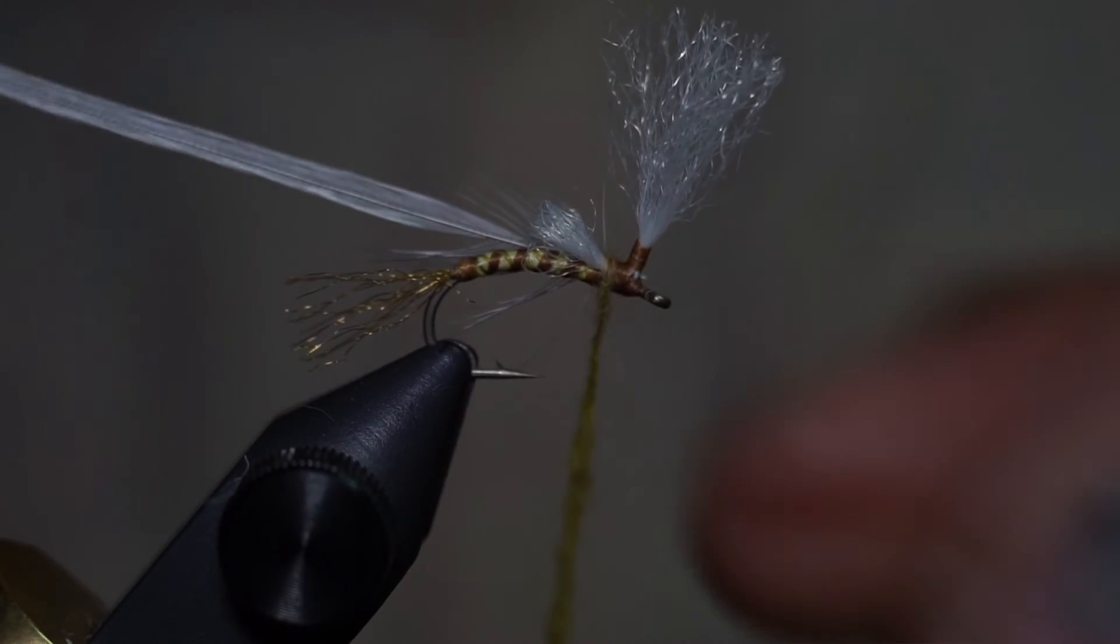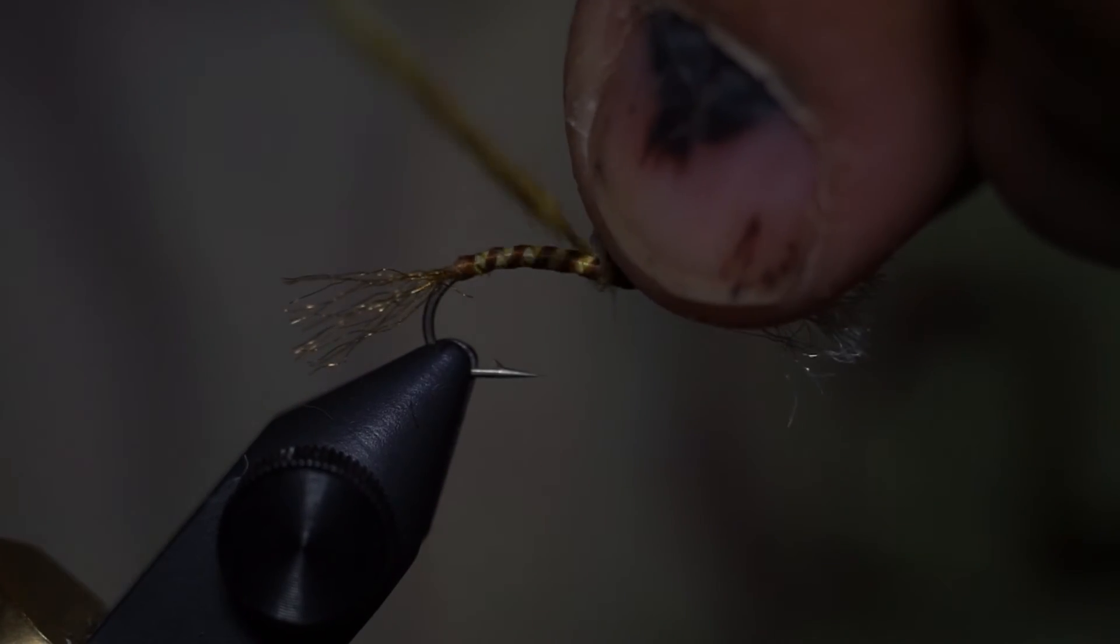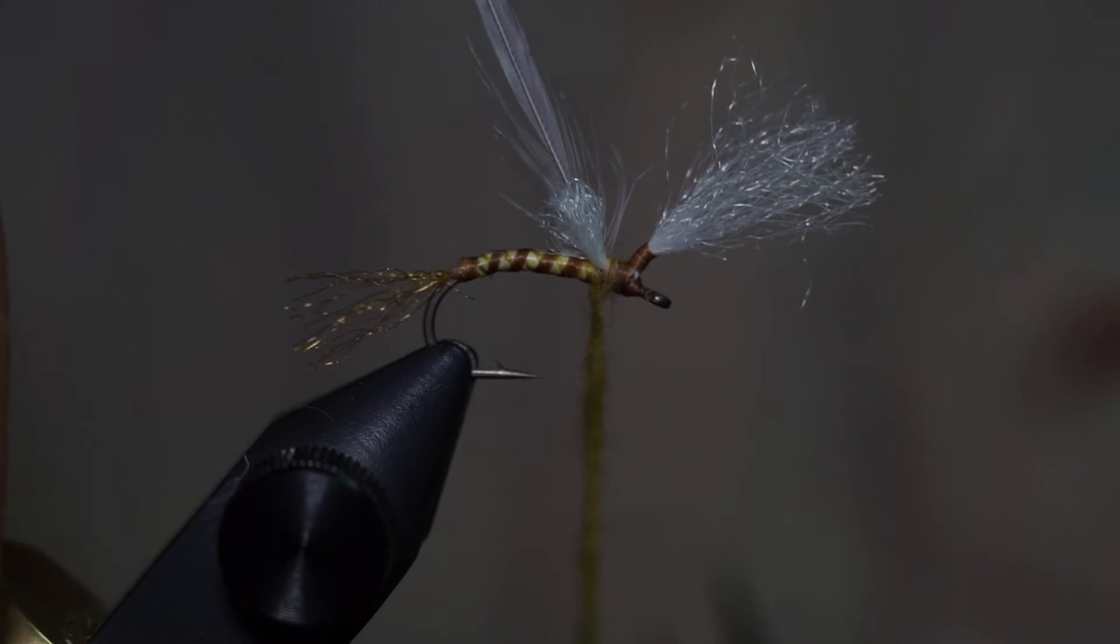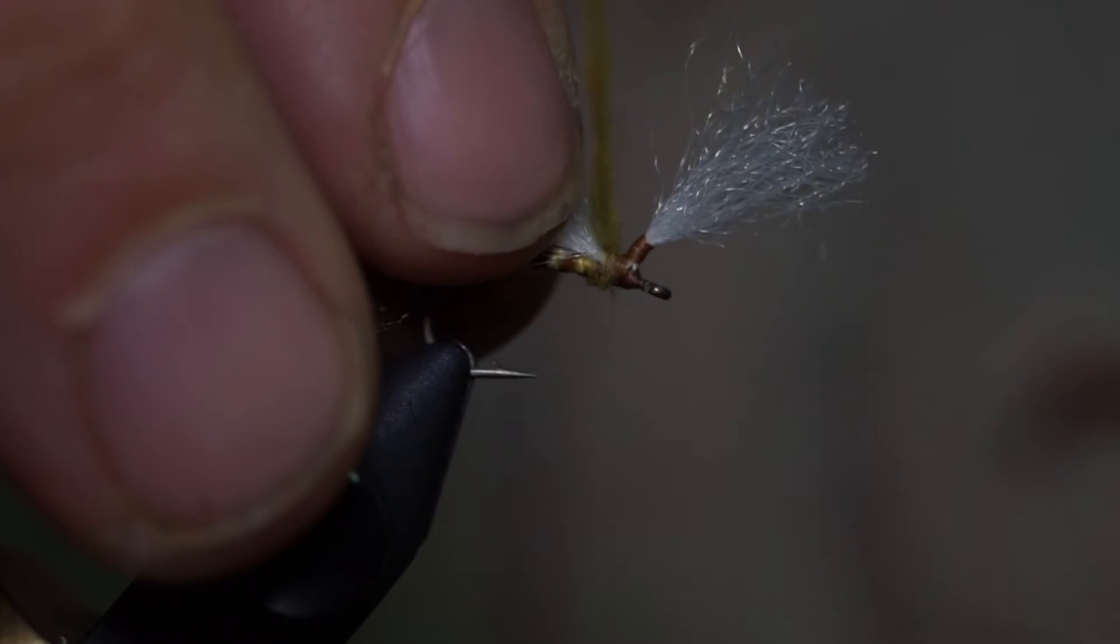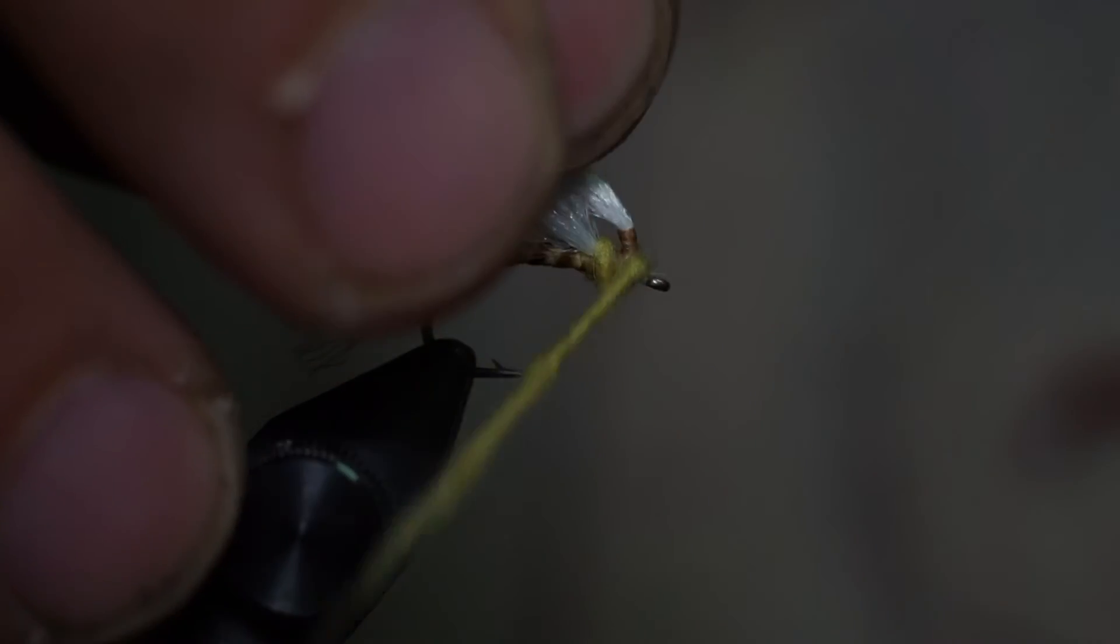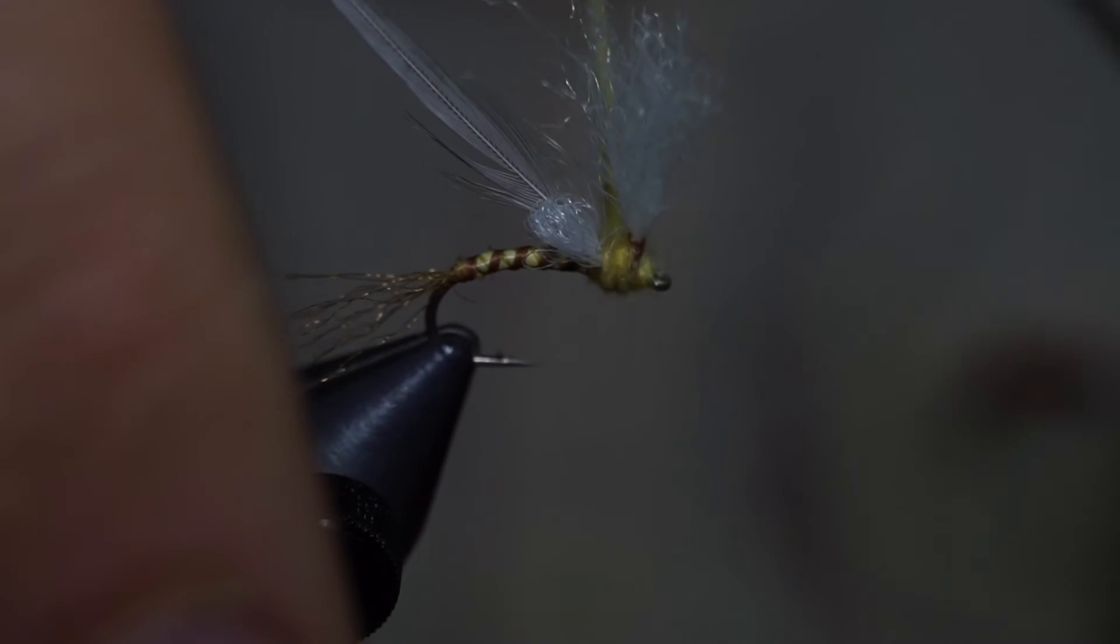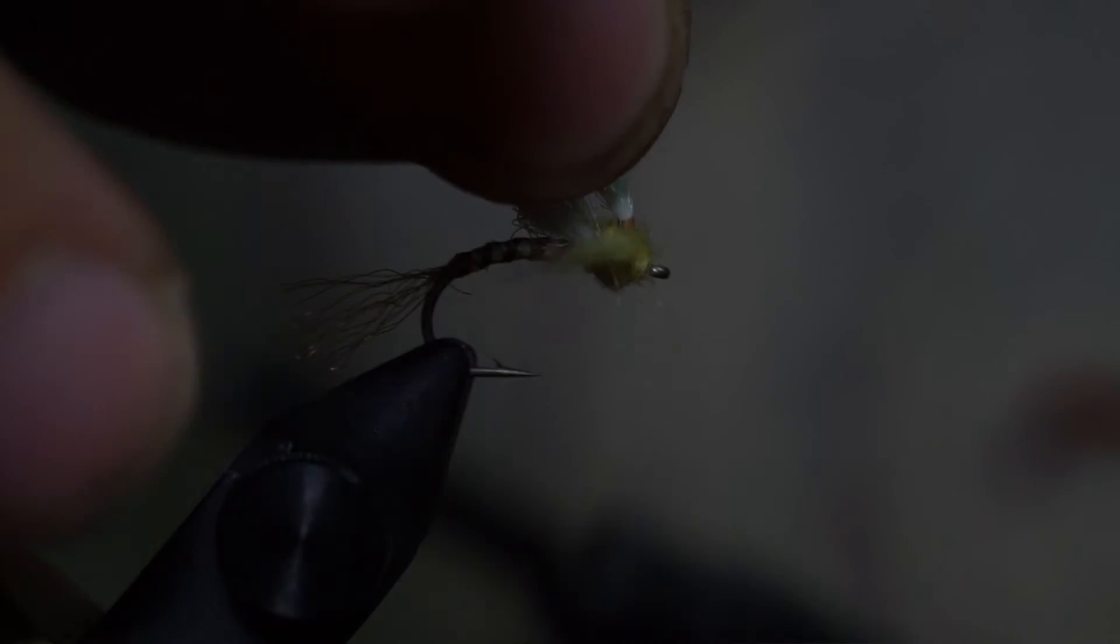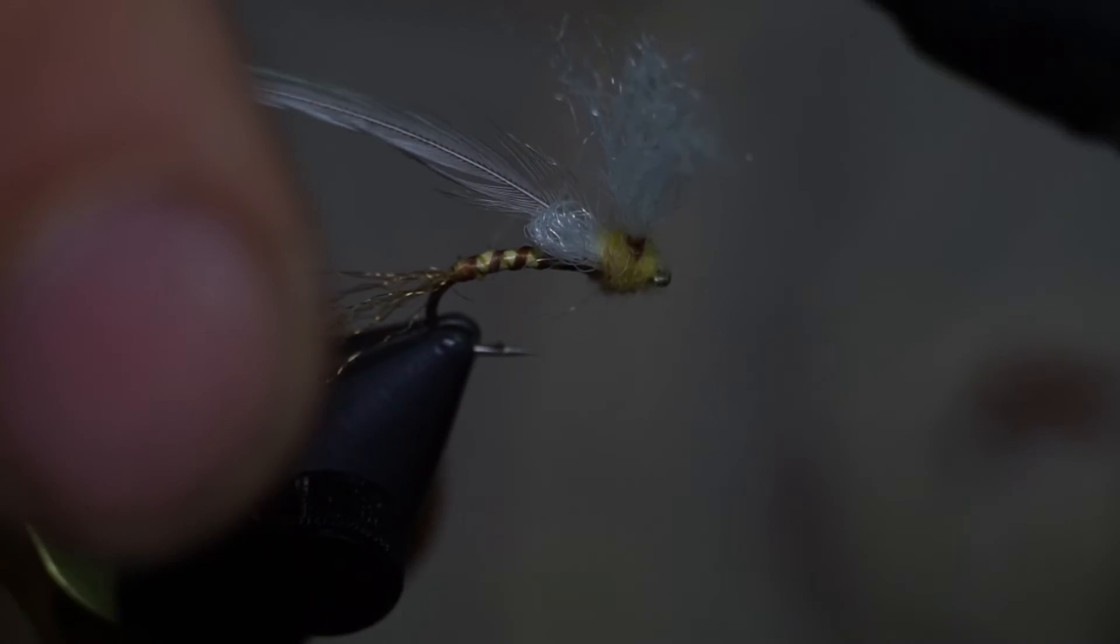Make one wrap behind the post, and then I like to make a wrap behind the little loop. Again, that loop will kind of help it float better too. Tie in a nice dubbing ball.